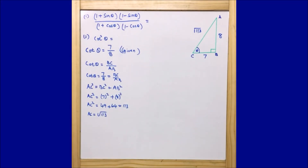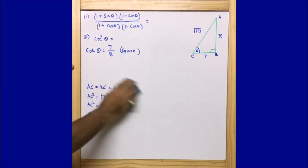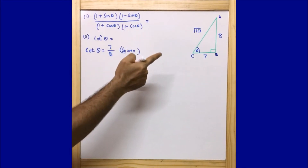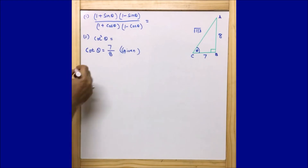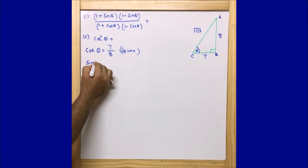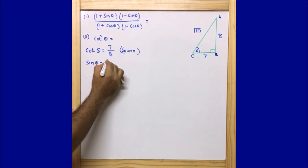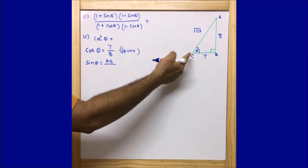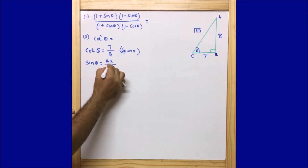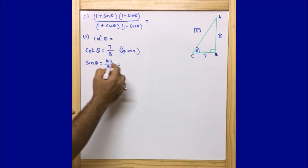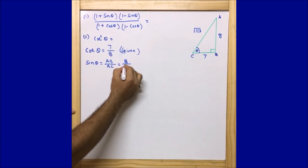Now in the question, sin θ and cos θ are involved. With AC = √113, AB = 8, and BC = 7, let us find sin θ and cos θ. sin θ = opposite side to angle θ / hypotenuse = AB / AC = 8 / √113.